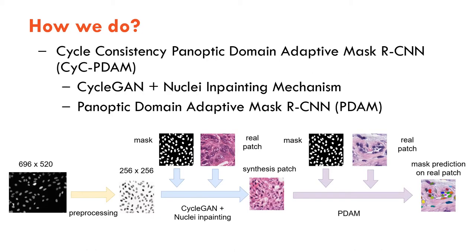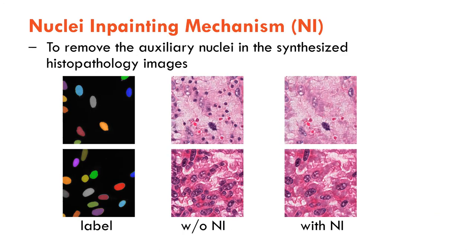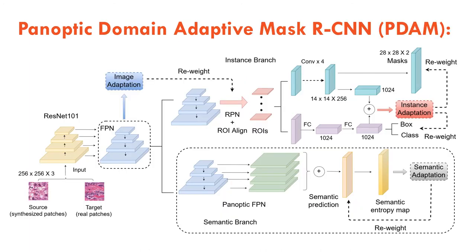Here is the overview of our method. We first use a CycleGAN to synthesize histopathology images. Then, we design a nuclear inpainting mechanism to refine them. To bridge the domain gap at the feature level, we further propose a PD-AN.